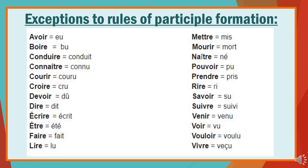Rire (to laugh) becomes ri. Savoir (to know) becomes su. Suivre (to follow) becomes suivi. Venir (to come) becomes venu. Voir (to see) becomes vu. Vouloir (to want or to wish) becomes voulu. Vivre (to live) becomes vécu. You need to know these by heart because they do not follow the rules of participle formation. For all other verbs, you can straight away apply the three rules given in the previous slide.